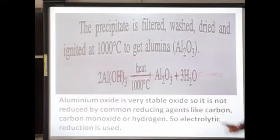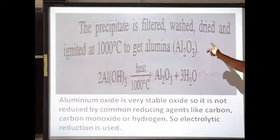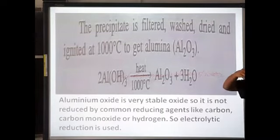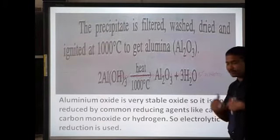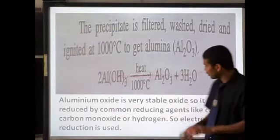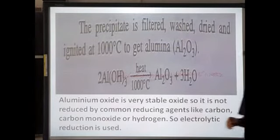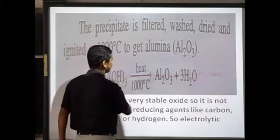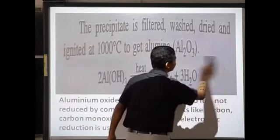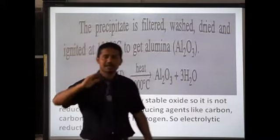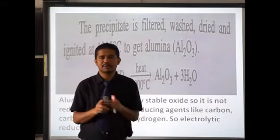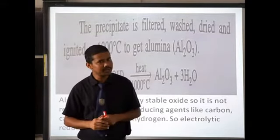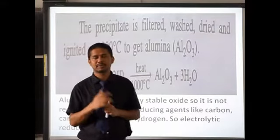The aluminium hydroxide precipitate on the filter paper is washed so that some impurities can be removed, then dried and ignited — heated strongly at 1000 degrees Celsius. On heating aluminium hydroxide at 1000°C, we get aluminium oxide along with water. Step two — concentration of ore — is now over. From bauxite, we have obtained aluminium oxide.